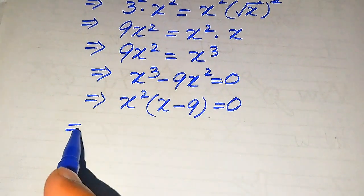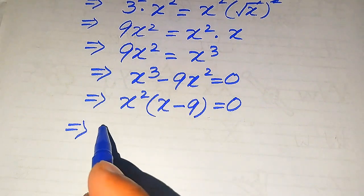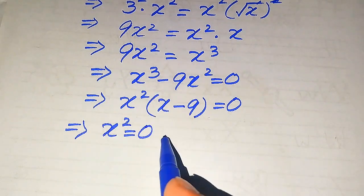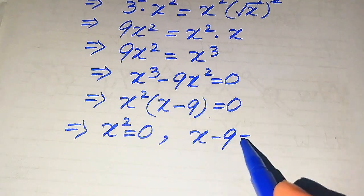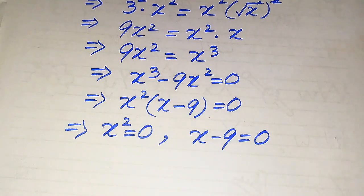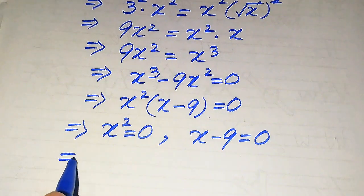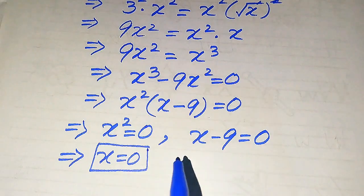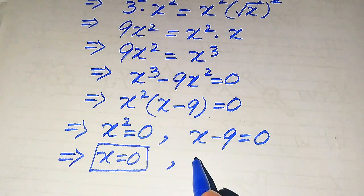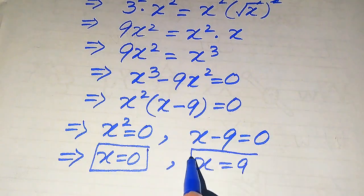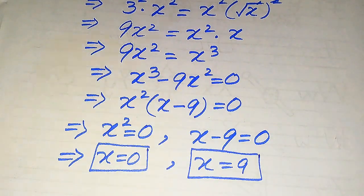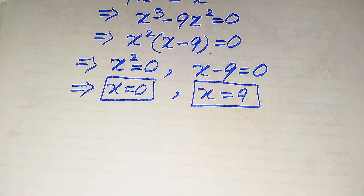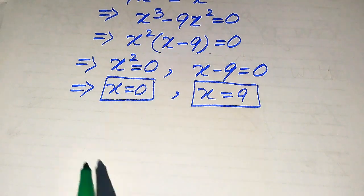We divide this equation into two cases: the first case is x squared equals 0, and the second case is x minus 9 equals 0. From the first case we easily get x equals 0, which is the first root of the given equation. From the second case we move minus 9 to the right hand side and it becomes x equals 9, which is the second root. So from the first method we get these two roots, and in the next step we verify which are solutions and which are extraneous roots.